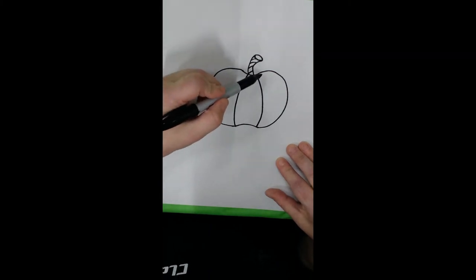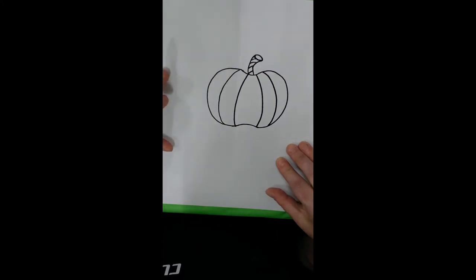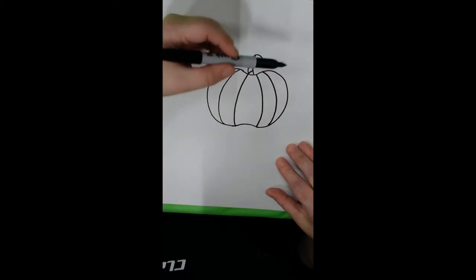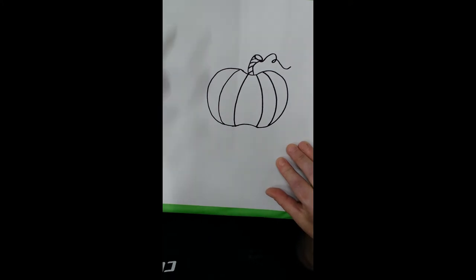And two more flattened C's, one here and one over here. So now it looks like we already have a pumpkin, which looks great. But maybe we can draw a little swirly that kind of looks like the vine that the pumpkin was picked from. That makes it look a little bit more fancy.